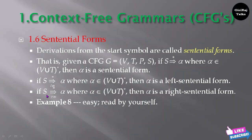Suppose if S derives to star RM alpha, rightmost derivation, where alpha belongs to V union T star, then alpha is a right sentential form.